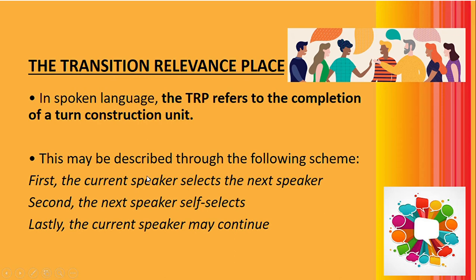The second principal finding is the transition relevance place, or TRP, which refers to the completion of a turn construction unit. Please take a look at this scheme in communication. First, the current speaker selects the next speaker. Second, the next speaker self-selects. Third, the current speaker may continue. The TRP relates to the transition from one speaker to another, and this transition takes place in the exchange of conversation.